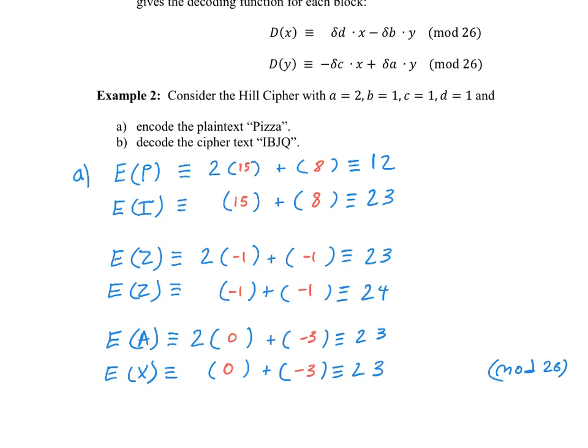So here are all our mod 26 remainders that we would get. So if we want to convert this into the ciphertext, 12 would be M, and then we'd have an X, and then we'd have an X for 23, 24 for Y, and then an X, and then an X. So here is our ciphertext that we would send away to send the word pizza using the Hill cipher.